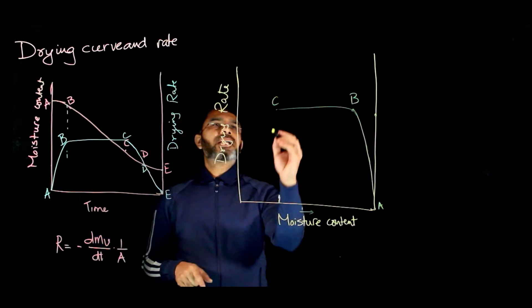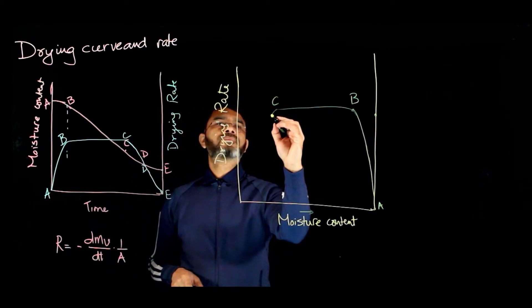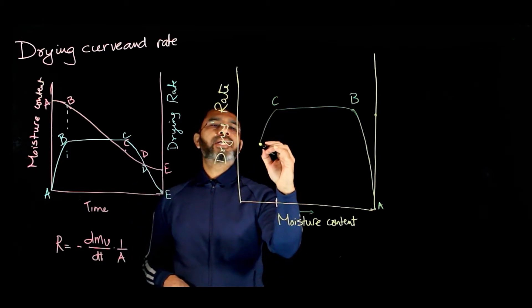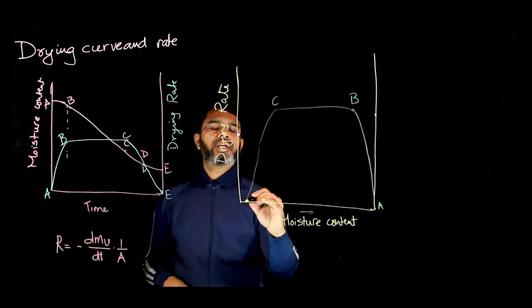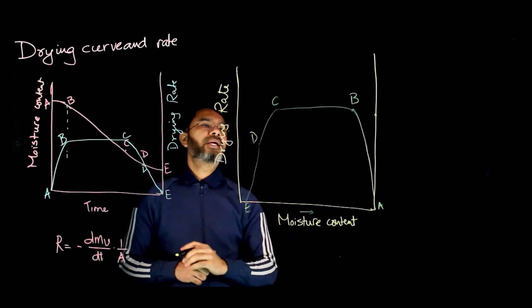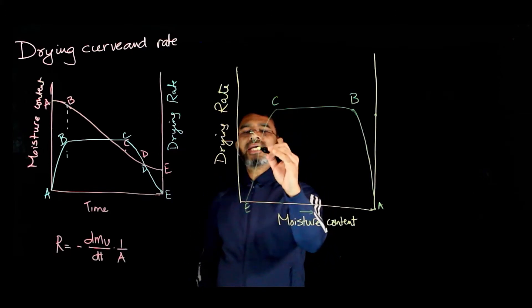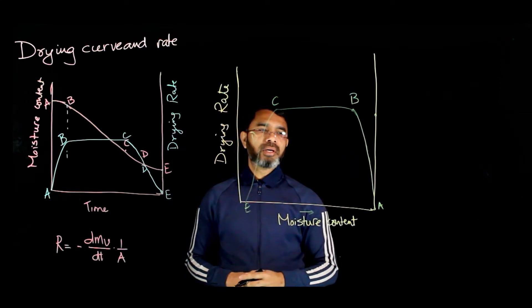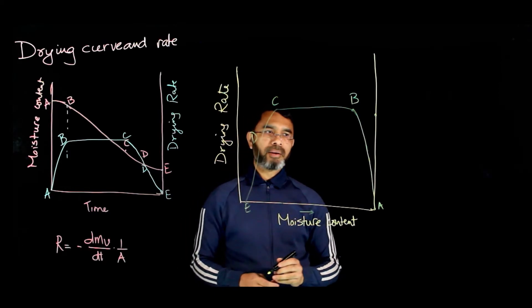From C to D there is a decrease, and from D to E there is further decrease. Between C and D, and D and E, there may be different behavior depending on the process, so there will be different shapes of this curve.